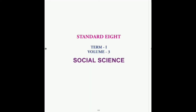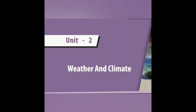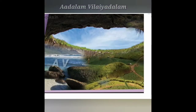Good morning children. This is a social science class where we are going to learn about weather and climate. In the last class we saw about trade and territory. Today in geography we are going to discuss weather and climate. In this chapter we'll come to know about the importance of weather and climate, elements of weather and climate, and instruments used to measure them.